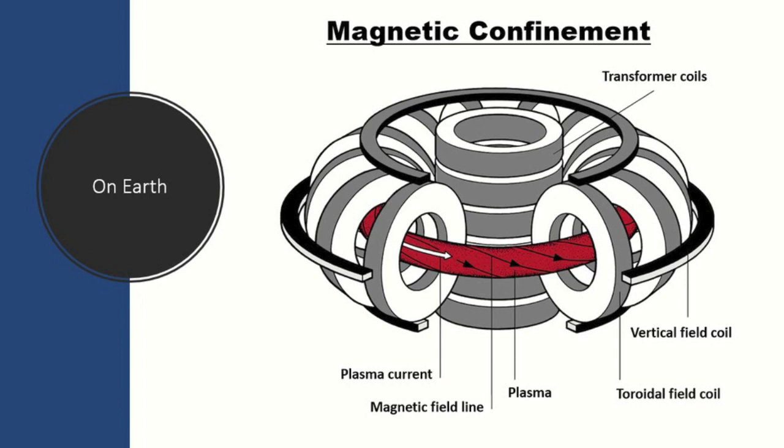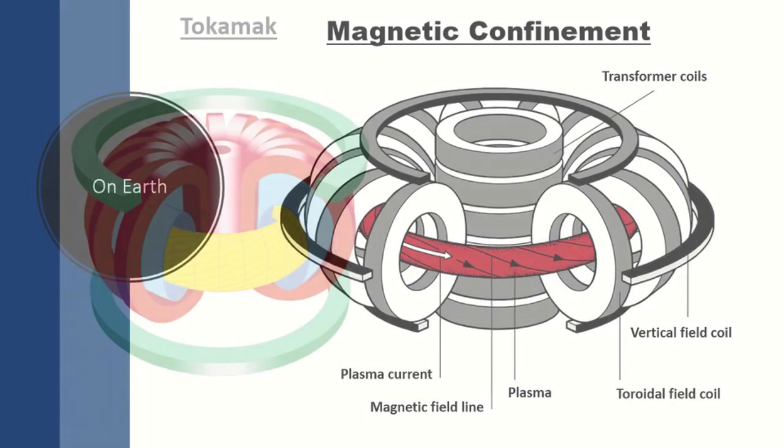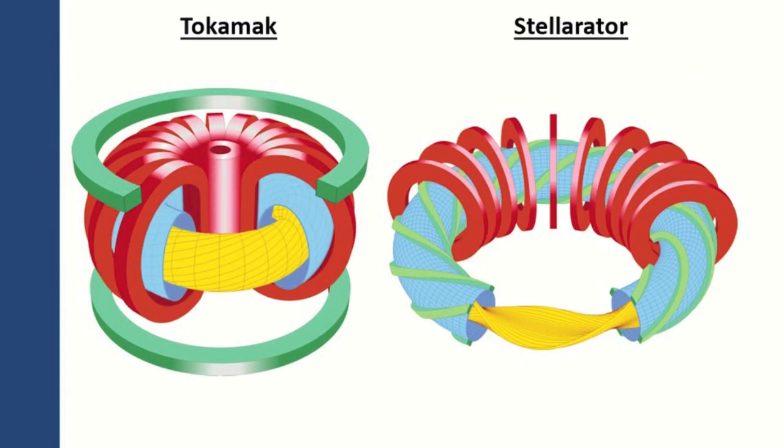Currently, two main experimental approaches that utilize magnetic confinement are being studied: Tokamak and Stellarator reactors, both of which were conceptualized in the 1950s. The key difference between the two reactors is how they keep the plasma from drifting outward.